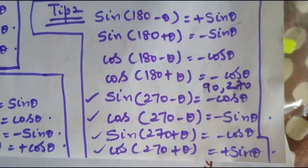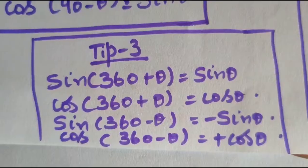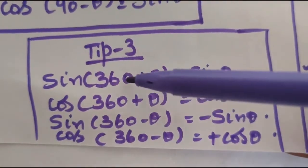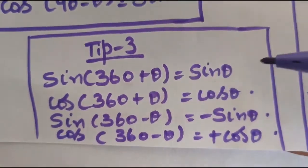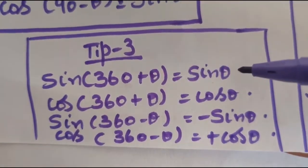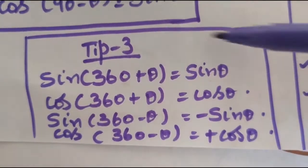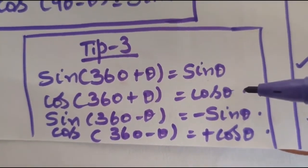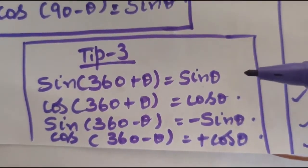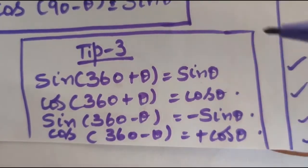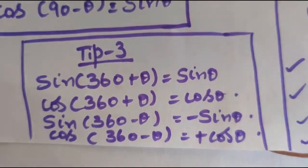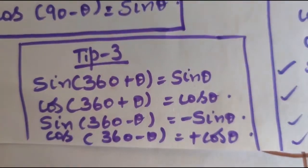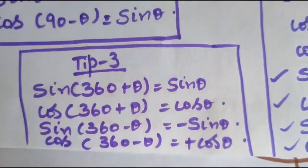Tip number three: if the angle is lying in the fourth quadrant, sin(360° + θ) remains sin θ, and cos(360° + θ) remains cos θ. These three tips — tip one, two, and three — should be very clear to you before solving the numericals. It is a must.